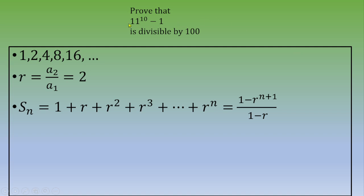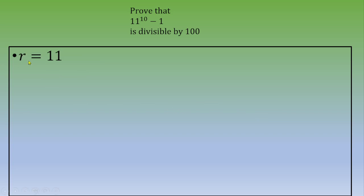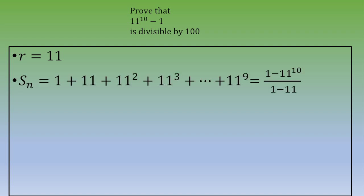In this exercise we have 11 to the power of 10 minus 1, and in the formula we have 1 minus r to the power of n plus 1. So let's create a geometric progression where r equals 11. Then the sum of the first terms — 1 plus 11 plus 11 squared plus 11 cubed, up to 11 to the power of 9 — equals (1 minus 11 to the power of 10) divided by (1 minus 11).